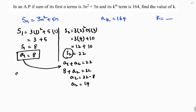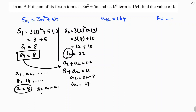Now we have the series: 8, 14, and so on. The first term A is 8, and the common difference d is A2 minus A1, which is 14 minus 8, equals 6.